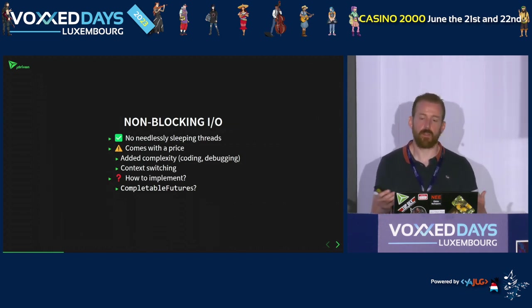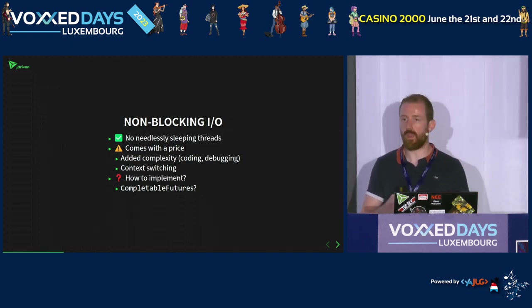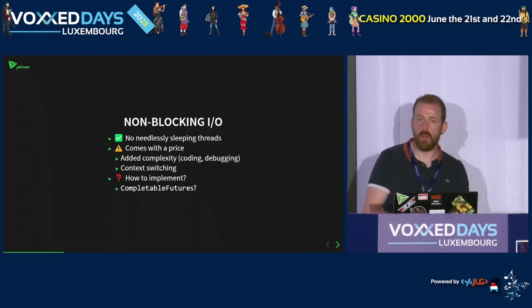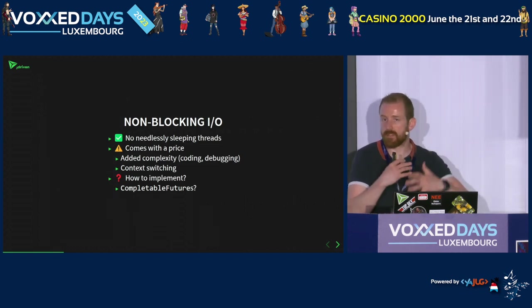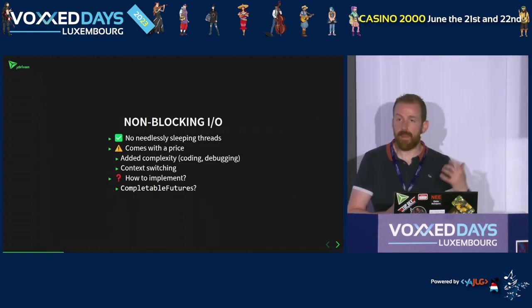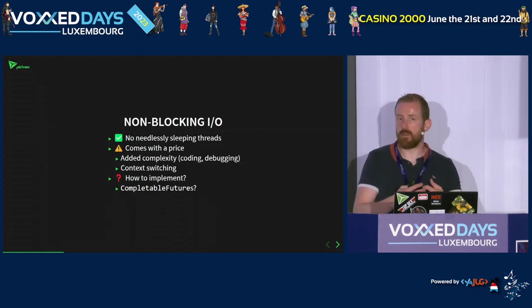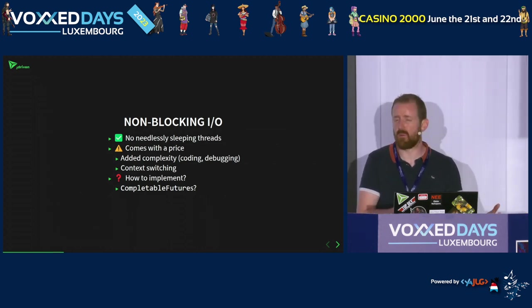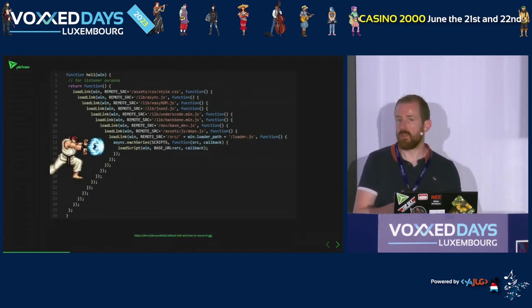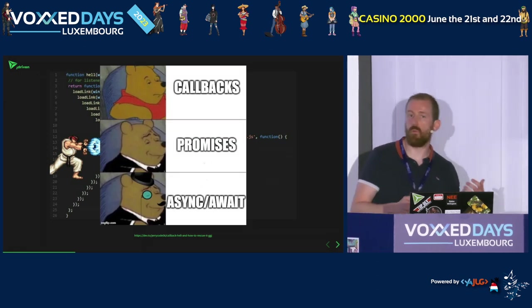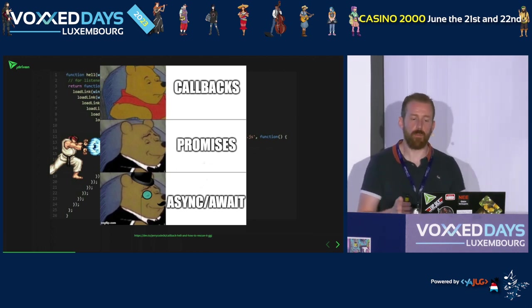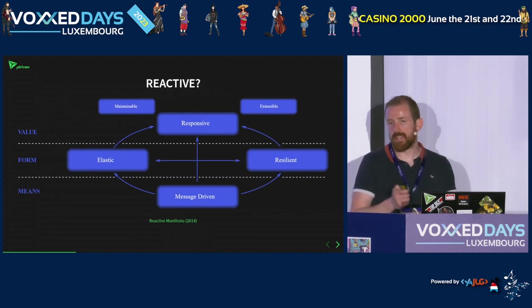But this comes with a price because we're adding complexity. We need to code a way to handle thread switching. When debugging, we get weird stack traces that don't make sense anymore. And how do we implement this on the JVM? We have completable futures, but that leads to callback hell. In JavaScript, they came up with async/await to prevent callback hell. But we don't have async/await in Java.